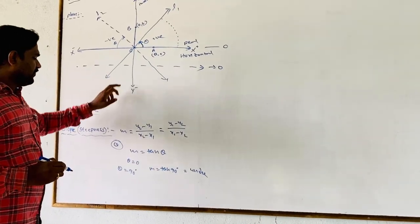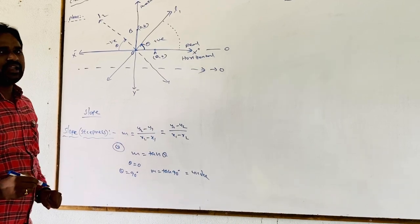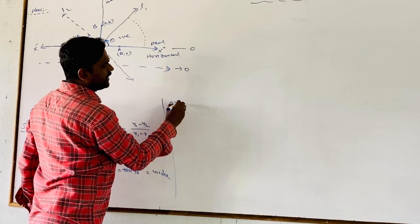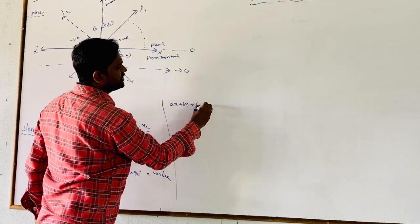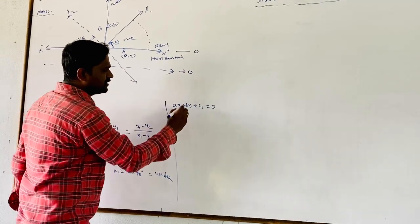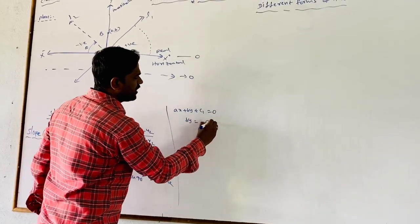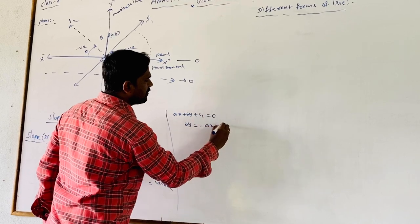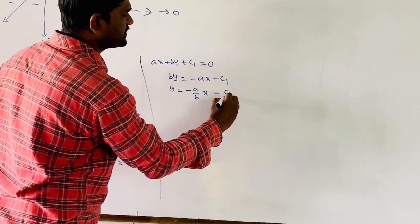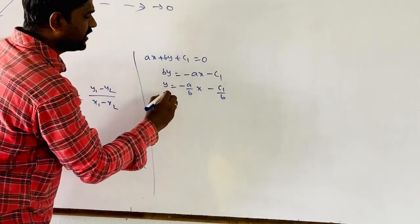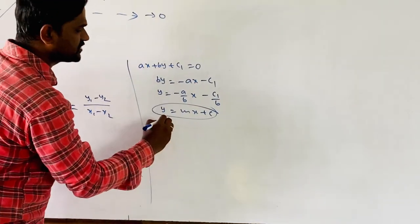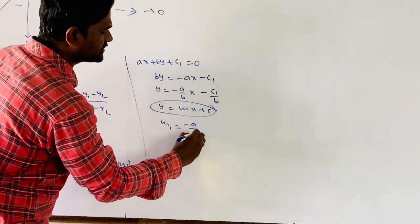We can also find the slope of a line given in standard form. For example, ax + by + c₁ = 0. Rearranging: by = −ax − c₁, so y = (−a/b)x − c₁/b. Comparing this with y = mx + c, the slope is m₁ = −a/b.